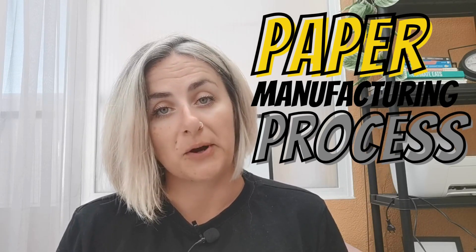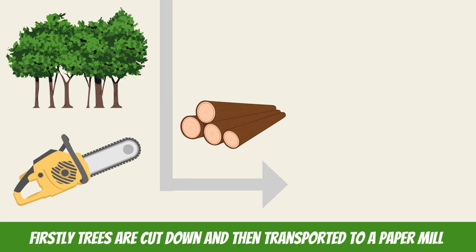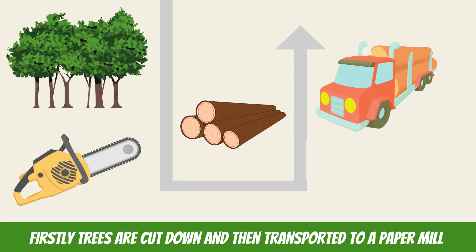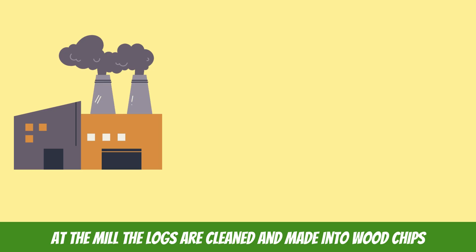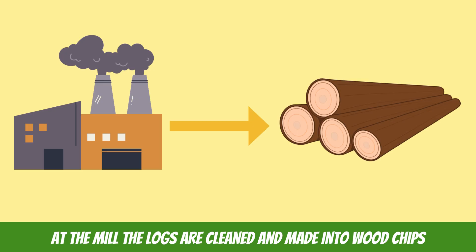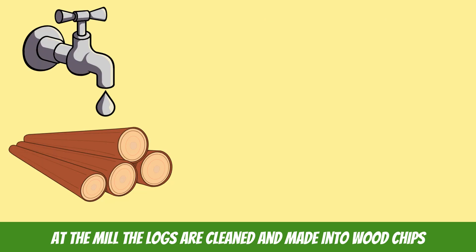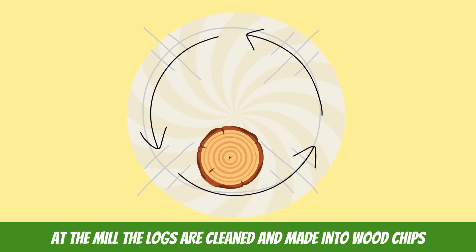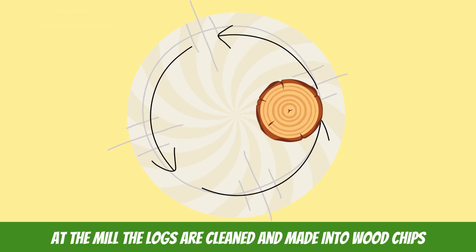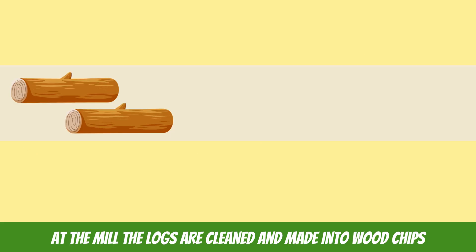Let's start with the paper manufacturing process. Firstly, trees are cut down and then transported to a paper mill. At the mill, the trees — now logs — have to be debarked. Bark is the protective layer that coats the tree. To debark these logs, they first have to be cleaned and cut before being sent through a rotating drum that will knock off the bark layer.